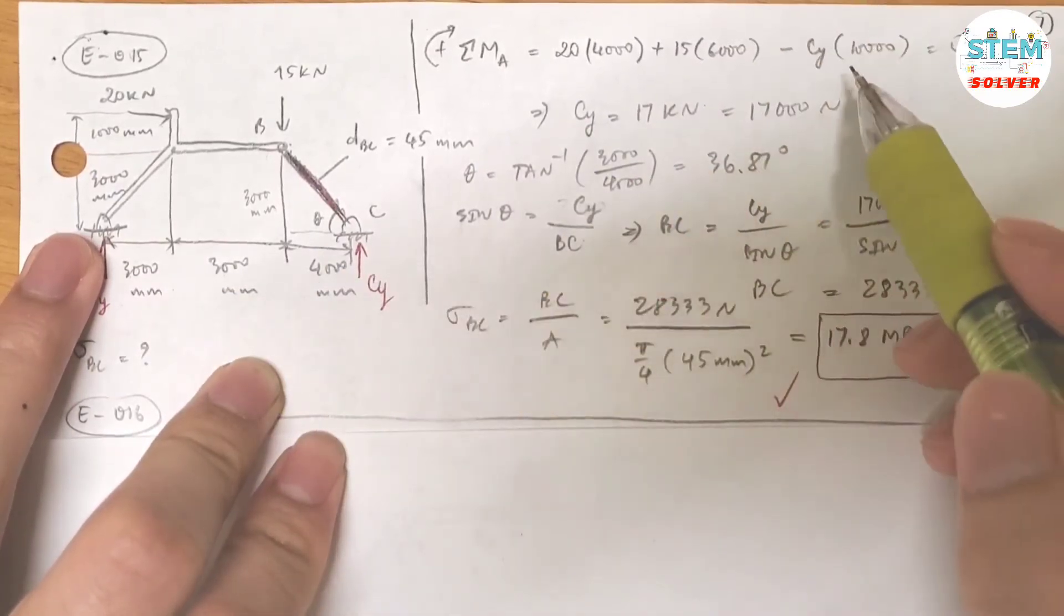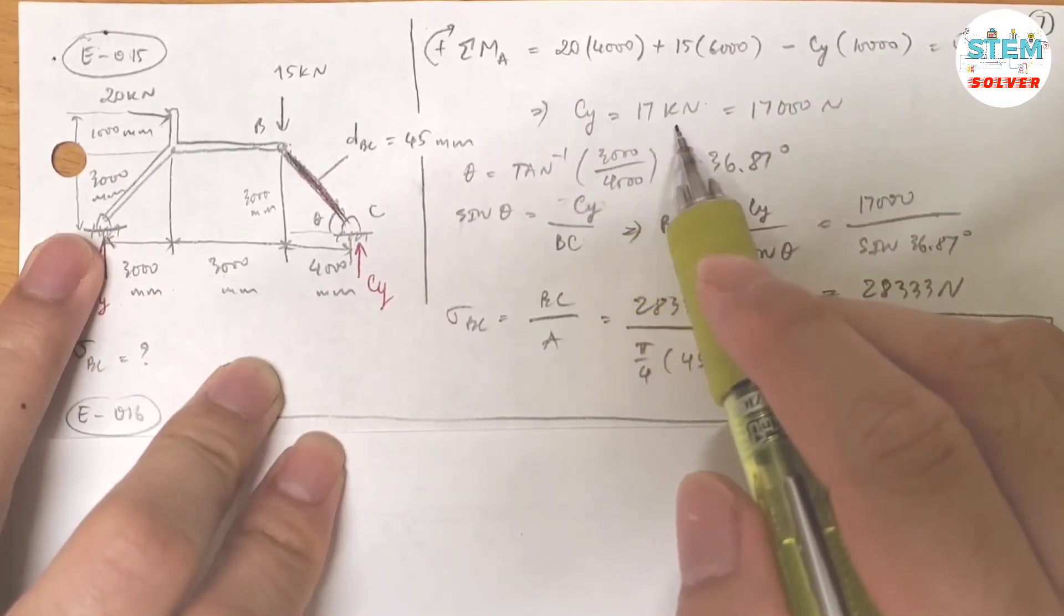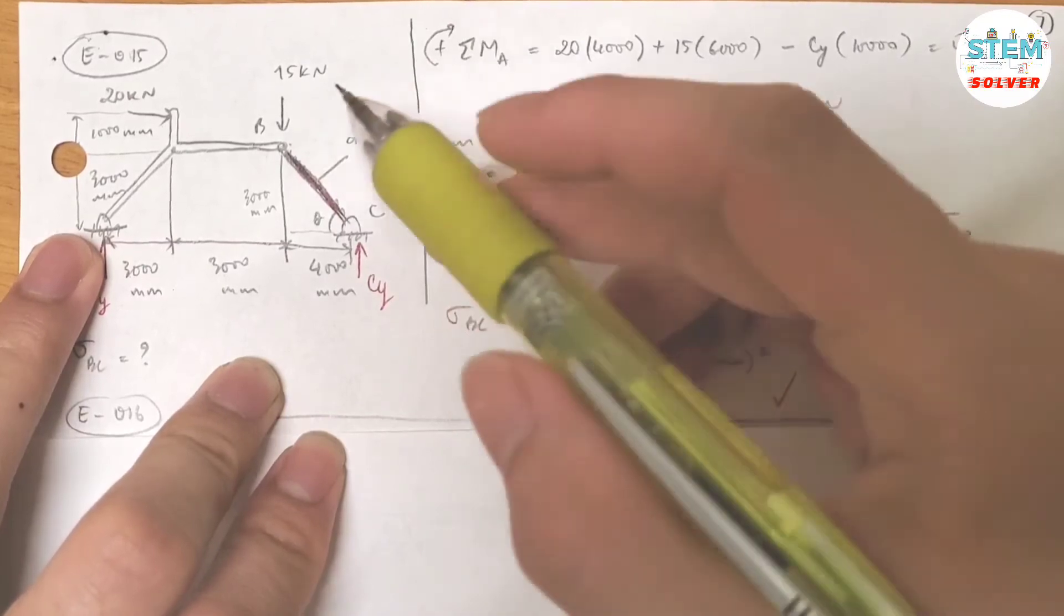Now for this force you have counterclockwise, so negative Cy times distance from here to here, which is 10,000. So for Cy, I got Cy equals 17 kilonewtons.